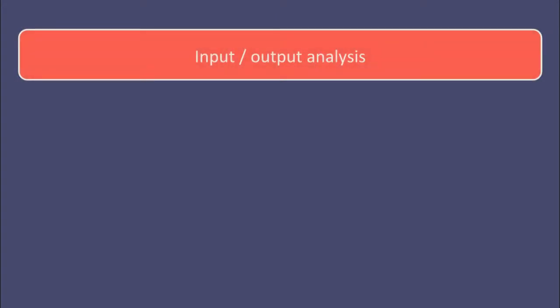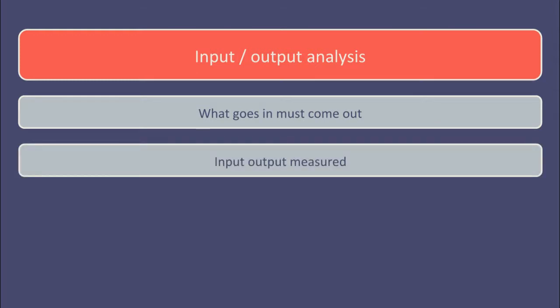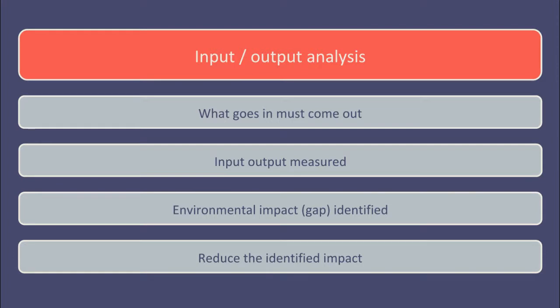Input-output analysis follows the principle of what goes in must come out. The physical quantity of raw materials and other inputs is measured. Then the physical quantity of outputs is measured — for example including finished goods, waste and packaging. Inevitably the weight of outputs will be less than the weight of inputs. The strategic management accountant must try and close the gap between the two — in other words, try to explain where all the inputs have gone. The assumption must logically be that any unexplained gap is likely to imply an environmental impact, pollution of some sort. Work focuses on identifying the size of the gap between inputs and outputs and reducing any identified environmental impact.